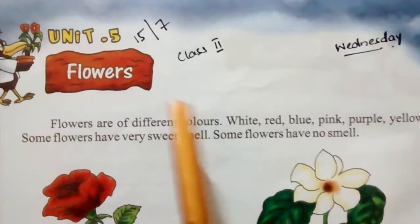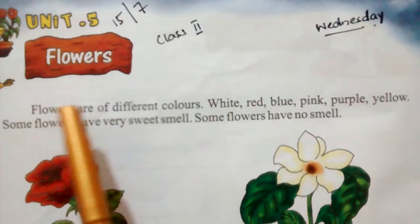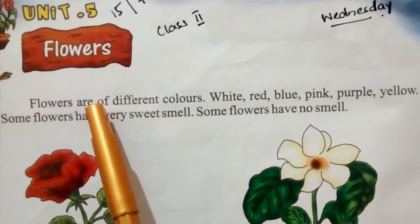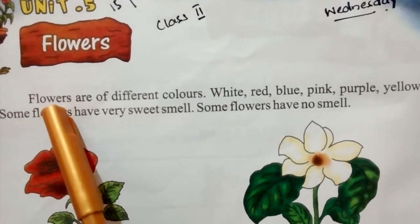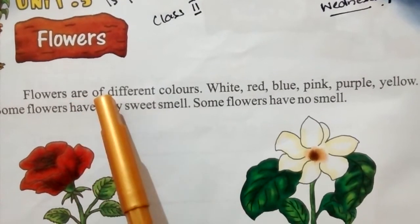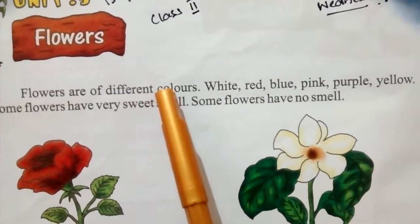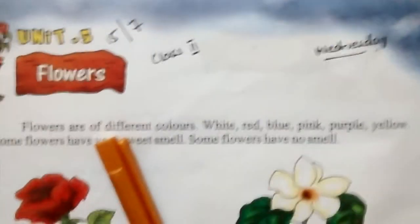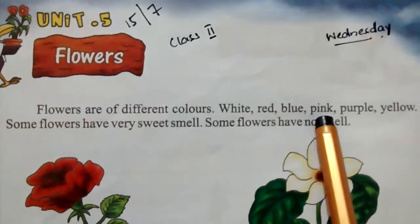Unit number 5: Flowers. Flowers are of different colors. F-L-O-W-E-R-S, flowers. A-R-E, are. O-F, of. D-I-F-F-E-R-E-N-T, different. Flowers are of different colors.